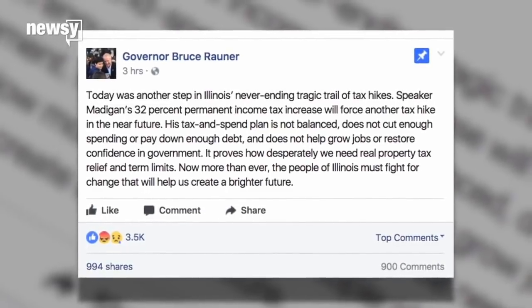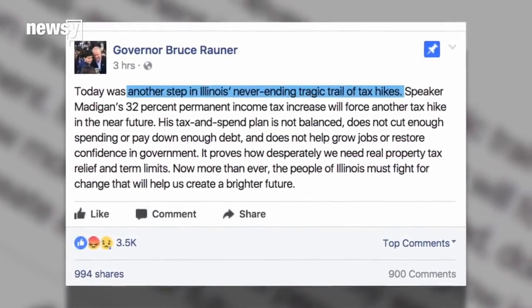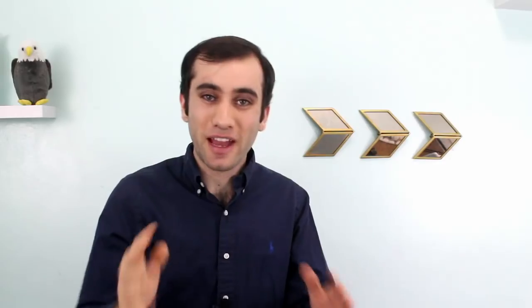Some Republican members of the state legislature helped Democrats get the three-fifths majority needed to override Rauner's veto, giving Illinois its first budget since 2015. Rauner said the spending bill was a mistake and called it, quote, another step in Illinois's never-ending tragic trail of tax hikes.